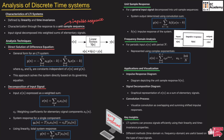Some important points to remember: the LTI system processes signals efficiently using its linearity and time invariance properties. Different methods — time domain and frequency domain — are used based on the type of input signal. This concludes the analysis of discrete time systems. Hope you have understood the topic. Thank you.